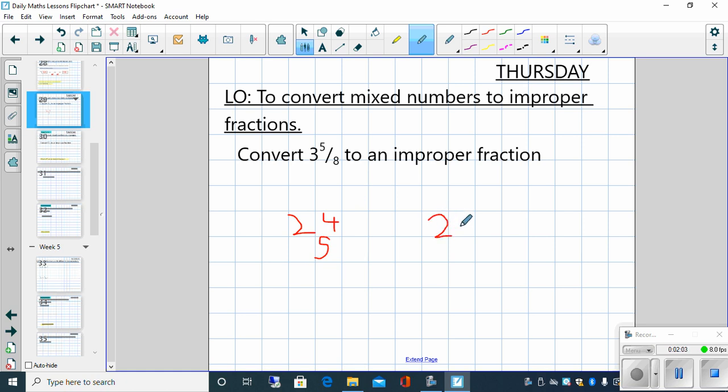So our numerator would be 29. And as an improper fraction our denominator would stay exactly the same. So 3 and 5 eighths as an improper fraction is 29 eighths. We know that it's an improper fraction because our numerator is a greater value than our denominator.